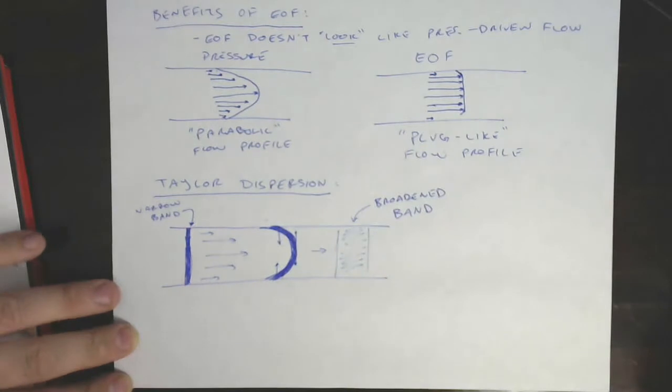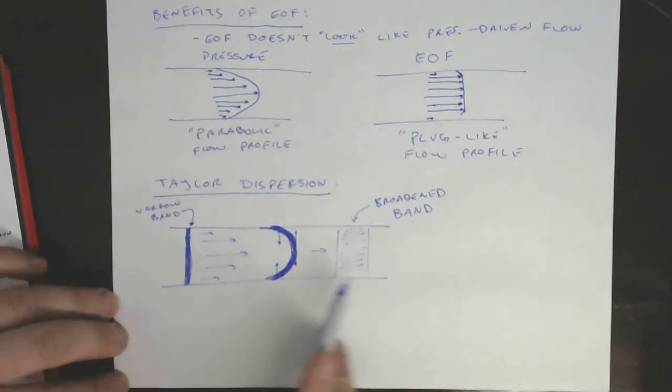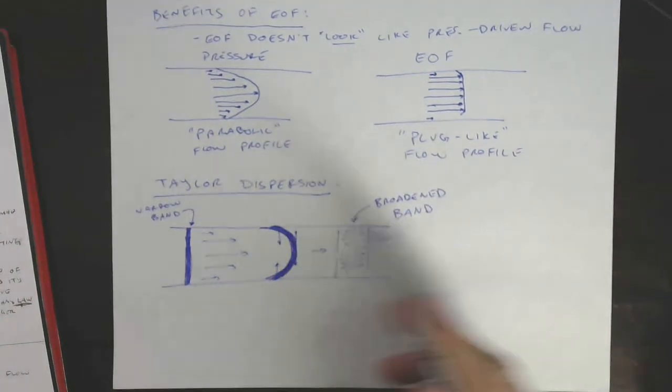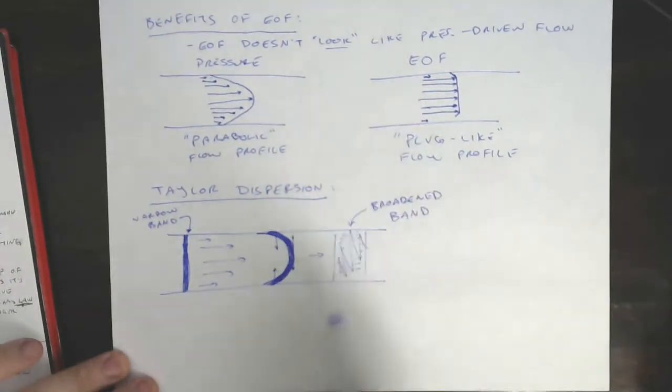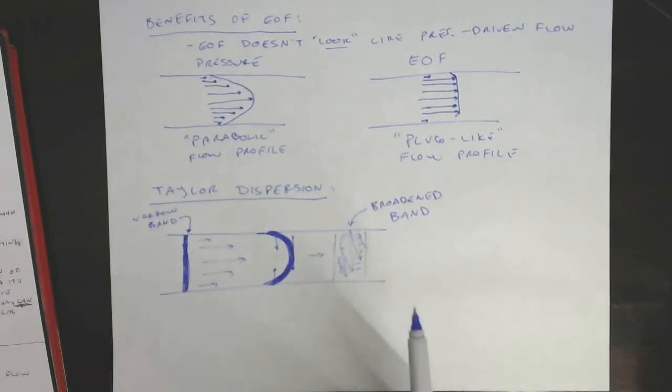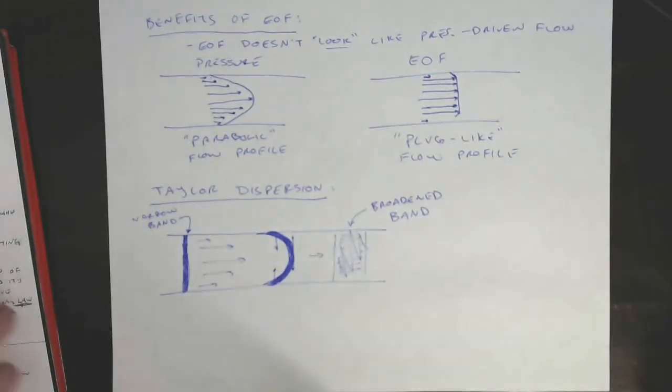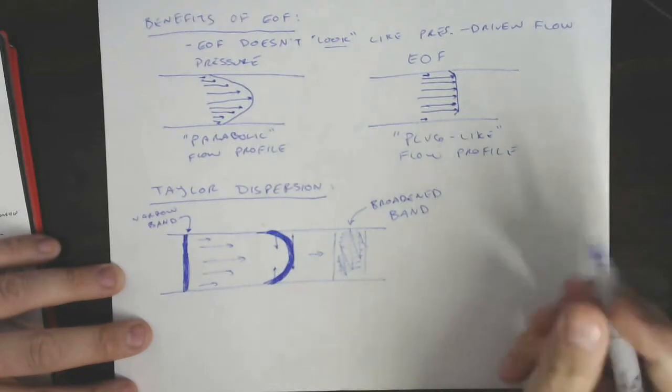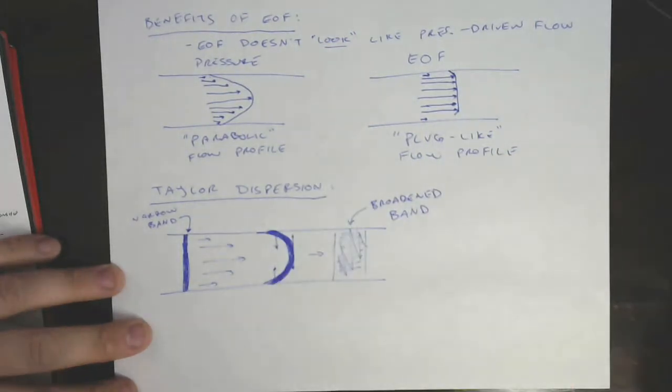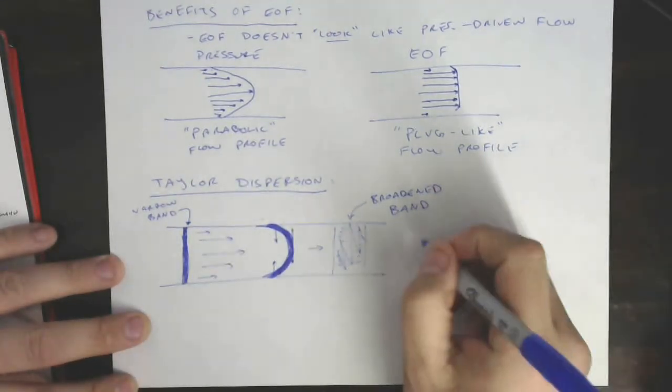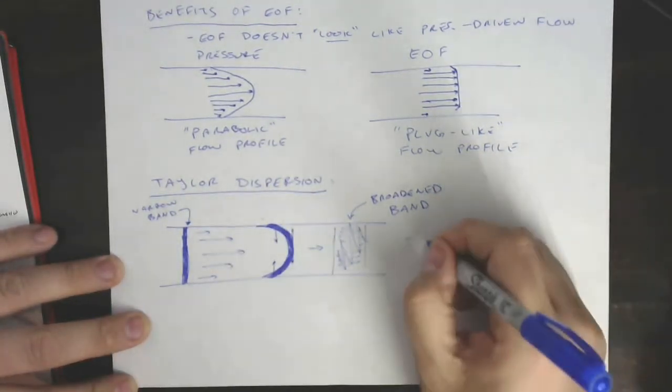It just basically by diffusion this area mixes in, these areas mix in, and you just get a broader, more diluted band. So you get a broadened band, and depending on your velocity conditions, depending on the size of this plug, depending on the diffusion coefficient of the molecules you're looking at, this can be a pretty dramatic effect. This effect of Taylor dispersion can actually lead to quite a lot of band broadening. It's not negligible. So in pressure driven flow we get Taylor dispersion. However, Taylor dispersion analysis is a technique that we do in my lab. Taylor dispersion is this phenomenon, and I will just put this down on paper so we're not confused.